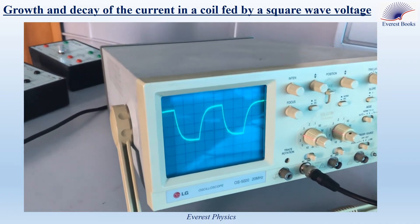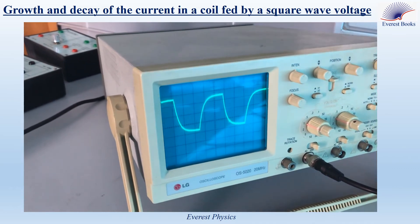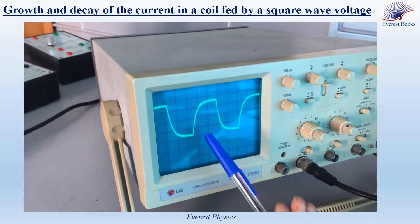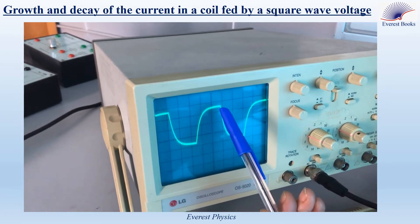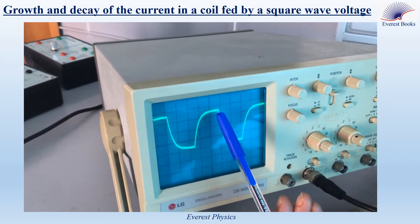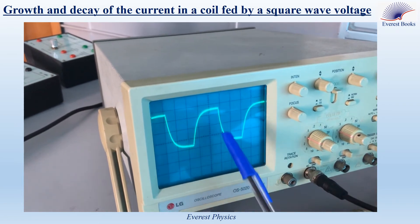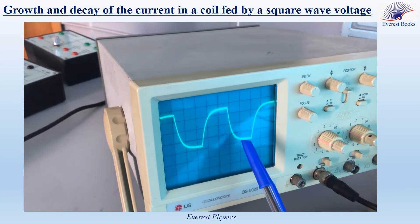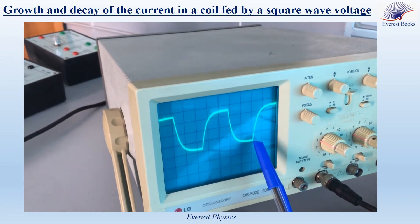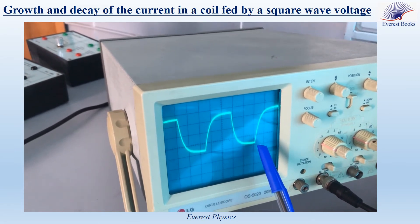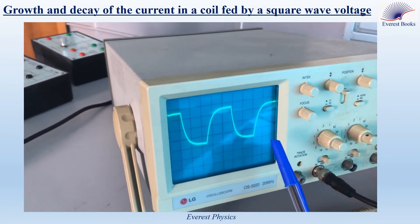Observe. This is the growth process of the current. At the end of the growth process, the current becomes constant — we say that steady state is attained. And this is the decay process. At the end of the decay process, the current becomes zero, and we say that steady state is attained.